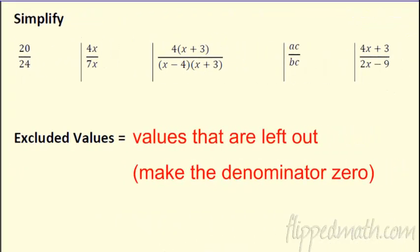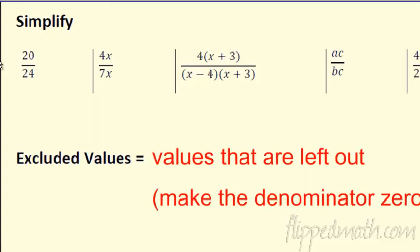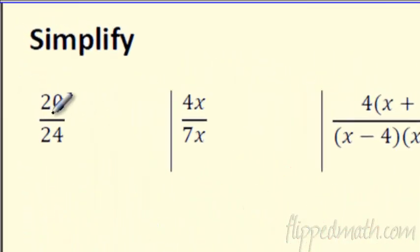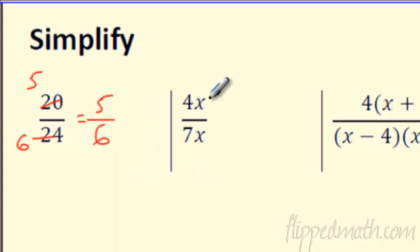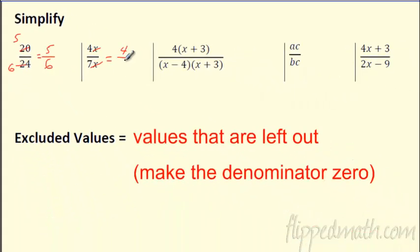We're going to start off first just by simplifying, to make sure we can simplify these before we get into multiplying and dividing them. We're going to start old school style. What if you just had a fraction? Remember, if I just wanted to reduce a fraction, you're looking for the biggest number that divides both of these. Four divides both of them — four goes into this five times, four goes into this six times — and we've reduced the fraction to five sixths. So we're doing the same thing here. Four sevens doesn't reduce, but can I cancel some things out? Just like I canceled the fours, you can cancel the x's, and you're left with just four sevenths.